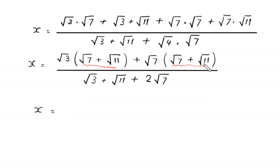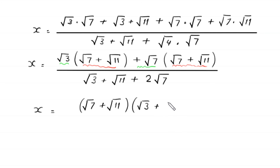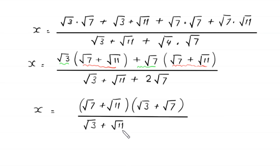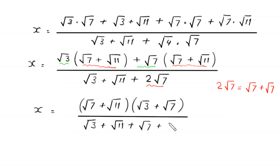Now, square root of 7 plus square root of 11 is a common factor in the numerator, so we factor it out, leaving bracket square root of 3 plus square root of 7, divided by square root of 3 plus square root of 11 plus 2 times square root of 7. We rewrite 2 times square root of 7 as square root of 7 plus square root of 7.